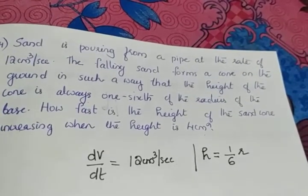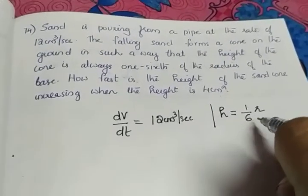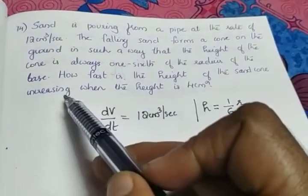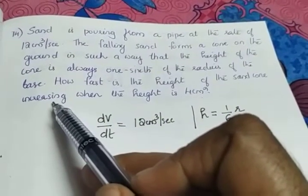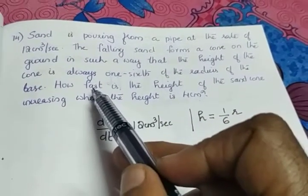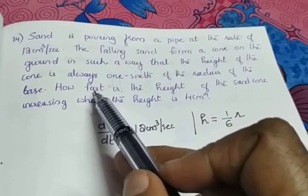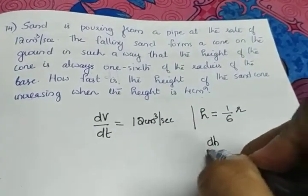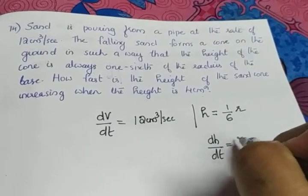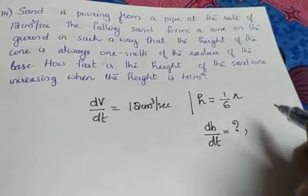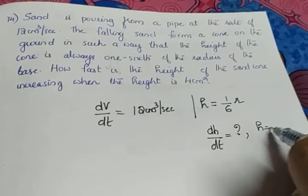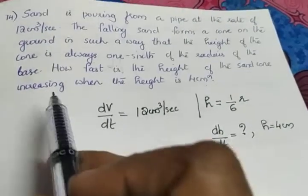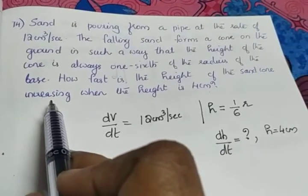So there is a relation connecting height and radius: h = (1/6)r. The question asks how fast is the height of the sand cone increasing — 'how fast' means we have to find the rate, and 'height' means we have to find dh/dt. We need to find dh/dt when h = 4 cm.